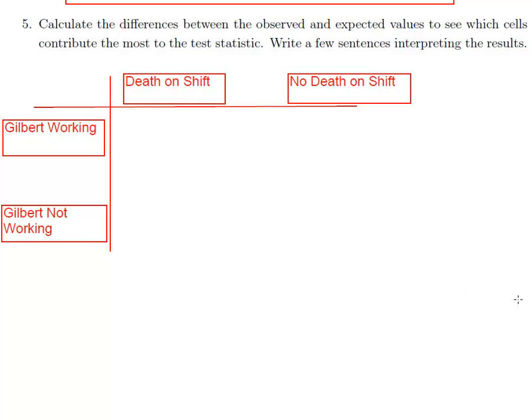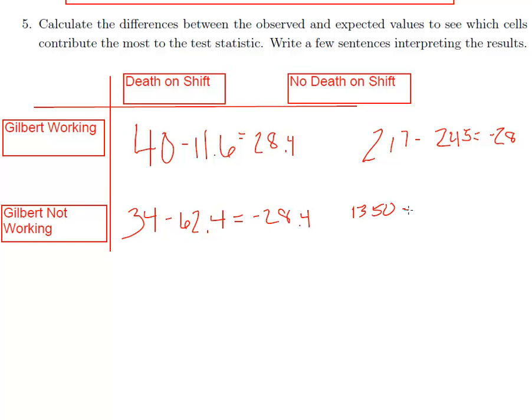Alright, so let's do that, and then we can summarize the results. So here we have 40 minus 11.6, and that's equal to positive 28.4. And because we just have a 2 by 2 table, I know this difference is just going to be the opposite of that. So it's going to be negative 28.4, but we'll do it anyway. Okay, and then I come over here. So I take 217 minus 245. That's equal to negative 28. And here I have 1350 minus 1322. And that's equal to 28.